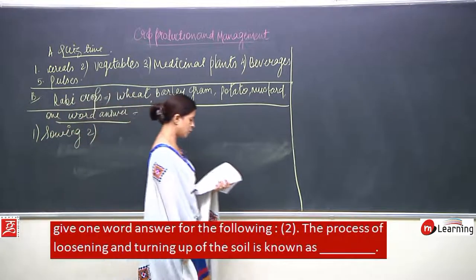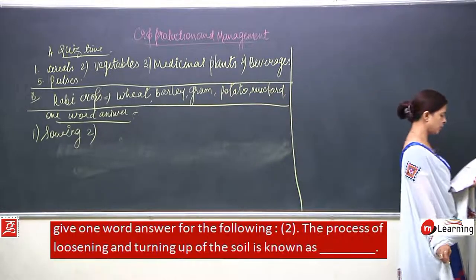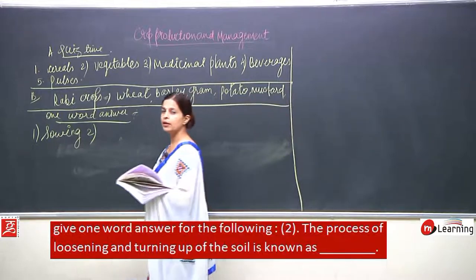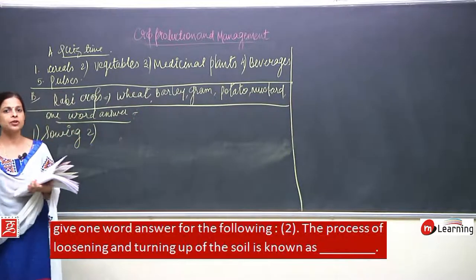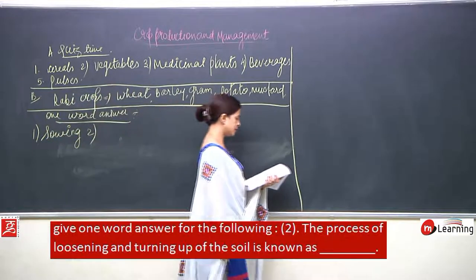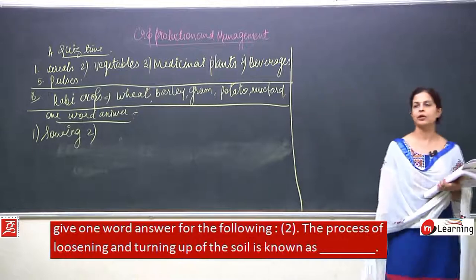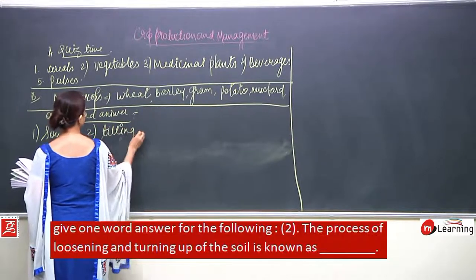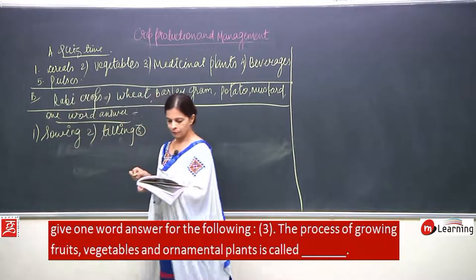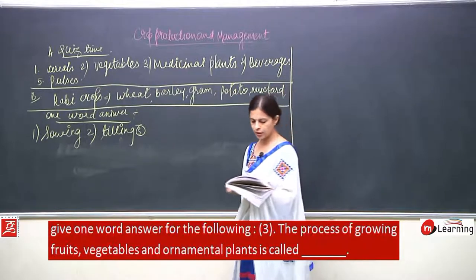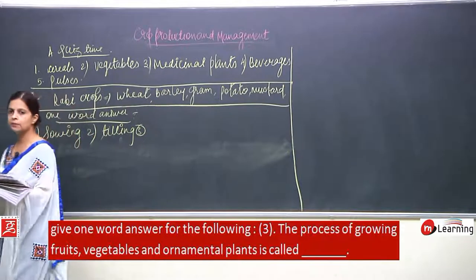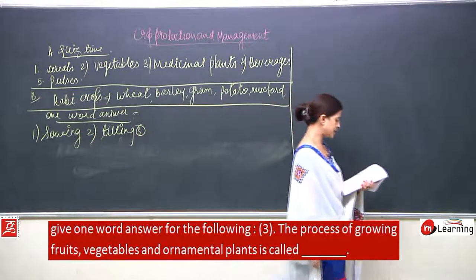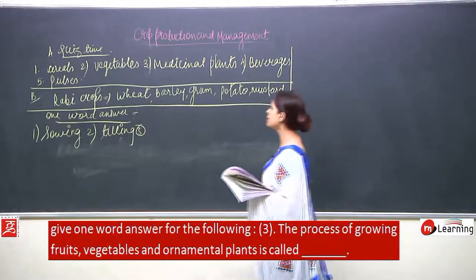Number two: the process of loosening and turning up of the soil is known as tilling. Number three: the process of growing fruits, vegetables and ornamental plants is known as horticulture.